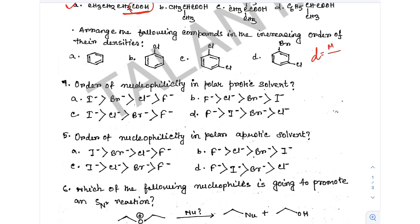Density is mass by volume. The volume factor is the most common factor. The basic structure is the benzene nucleus, so the mass determines the density. The compound with the highest mass has the highest density.